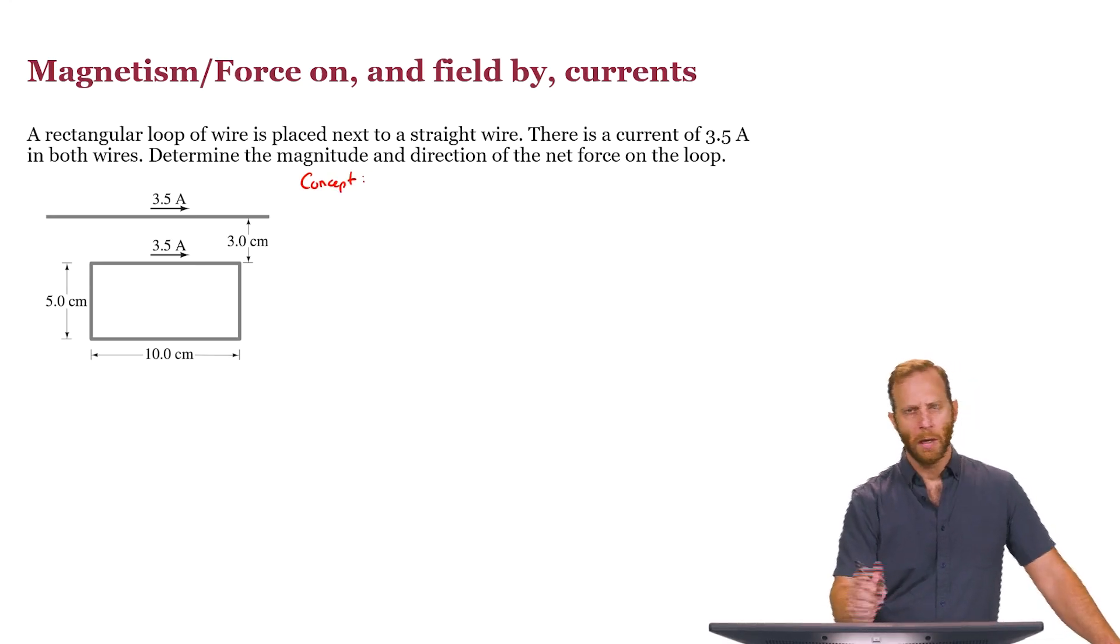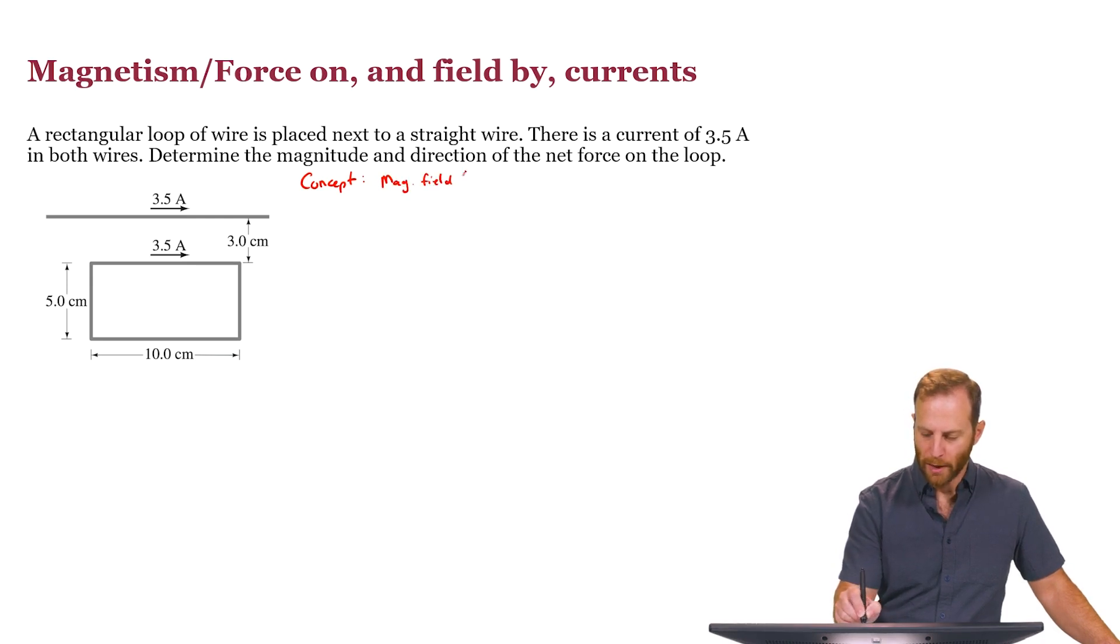Concept. First of all, a long straight wire will produce a magnetic field if there's current flowing through that. So we need to remember how that works. Magnetic field, the symbol for that is B, due to, let's say, long or infinite straight wire.